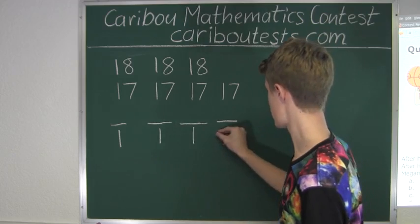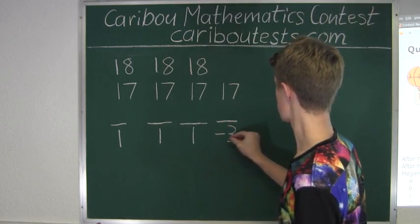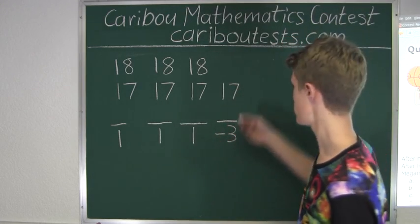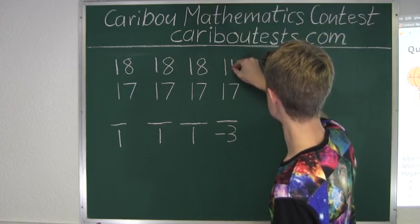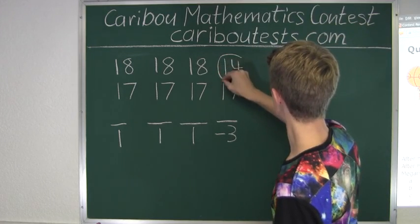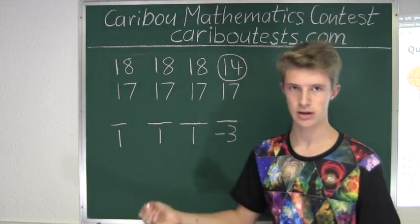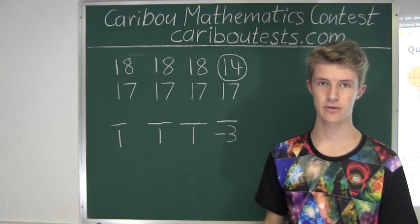So we have negative three, which means that 17 minus 3 is 14. So she got 14 points in her fourth game.